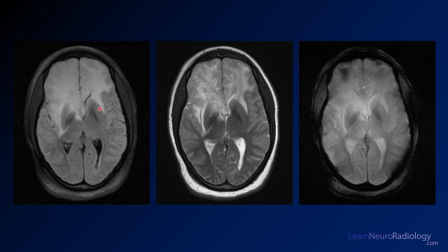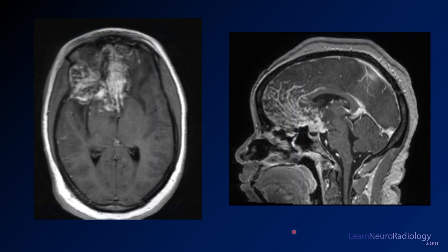On FLAIR, there's abnormality in the frontal lobe with loss of gray-white differentiation on T2, and some areas of intermediate to dark T2 signal. Gradient imaging shows no significant blood products. On post-contrast imaging, there's avid leptomeningeal enhancement following the sulci and coating the gyri, along the surfaces of the corpus callosum, in the basal cisterns, and some nodular solid enhancement in the basal cisterns as well.